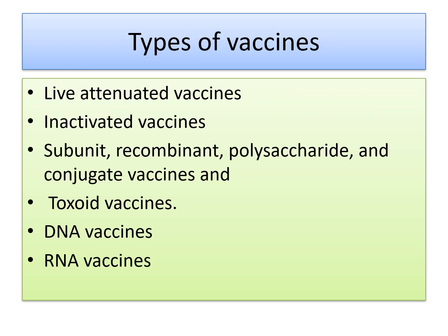We have different types of vaccines available in the market. The types of vaccines present in the market are: live attenuated vaccines, inactivated vaccines, subunit vaccines, recombinant vaccines, polysaccharide and conjugate vaccines, toxoid vaccines, DNA vaccines, and RNA vaccines. We will see each type, their importance, and examples for each, to understand them in detail and know the significance of every type.